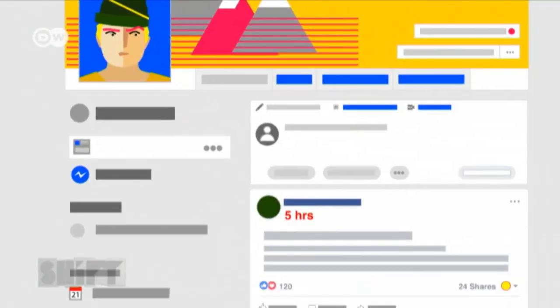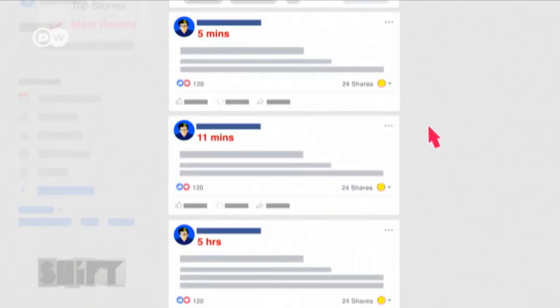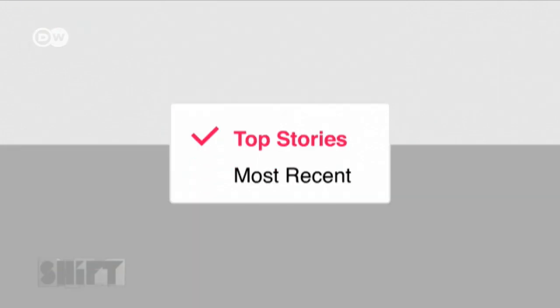Users can turn this pre-selection off and have posts shown in chronological order. But that preference isn't saved, so the next time they log on they will again see posts selected by an algorithm using their data.